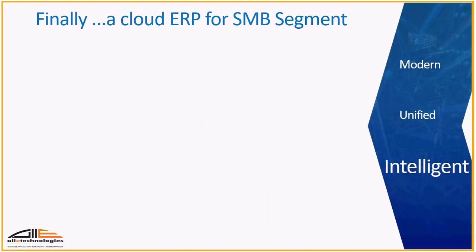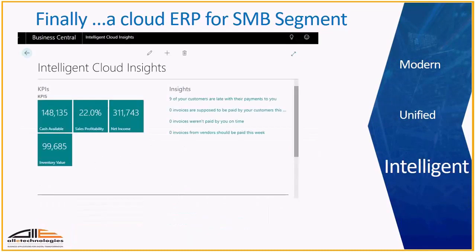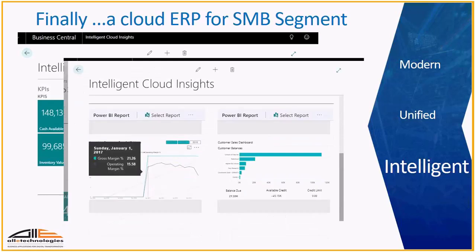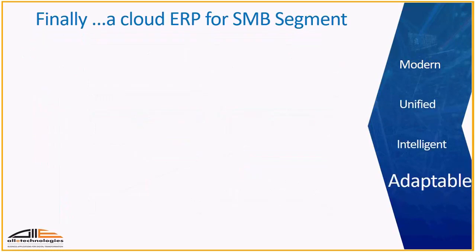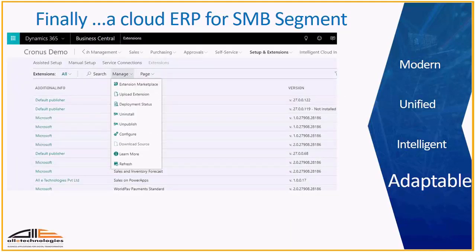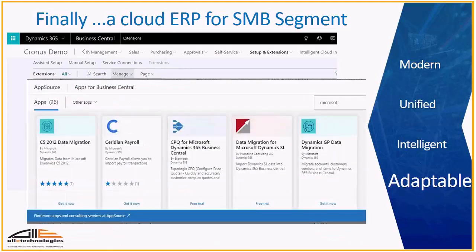Business Central leverages the power of intelligent cloud to provide actionable insight for decision makers. The intelligent cloud insight page in Business Central shows KPI charts along with insights into potential areas of concern, as you can see on the right side. Business Central is also highly adaptable — it can be configured and customized to meet your specific business requirements, either by installing extensions or pre-built solutions available on the Microsoft App Store.